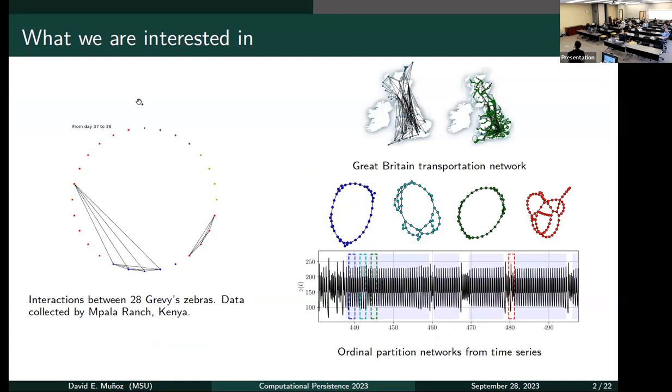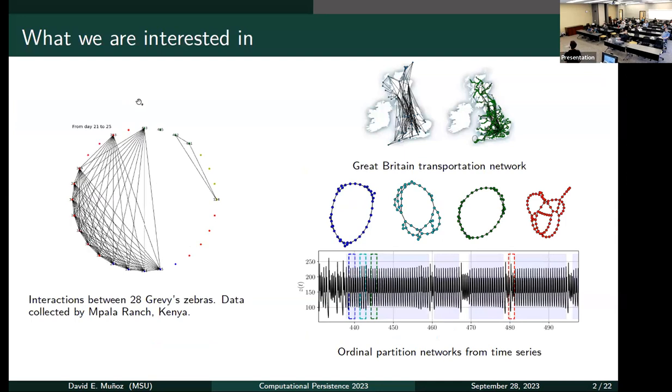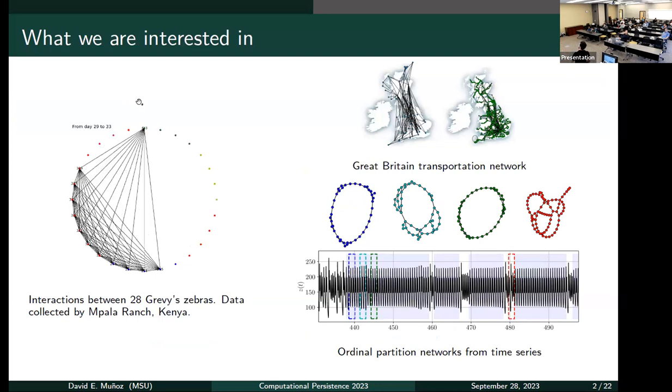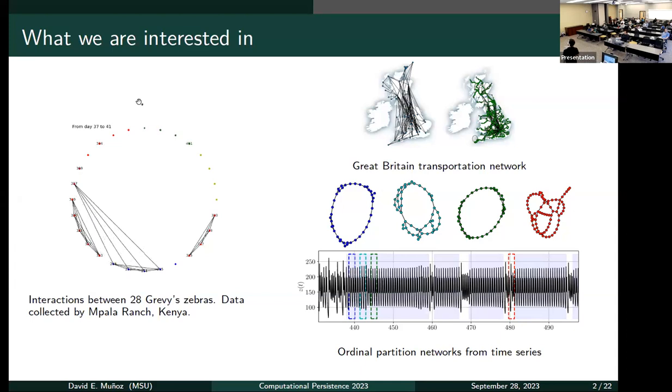Here are a couple examples. On the left, this is a network from 28 zebras that were observed during two months. We can draw edges between two zebras on a day where they were seen together, and we get this kind of network.